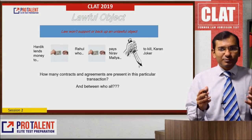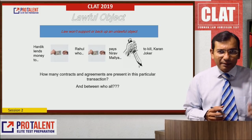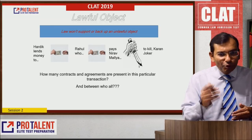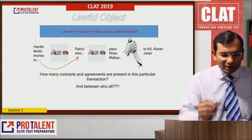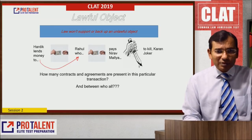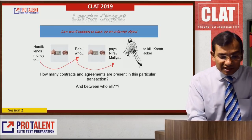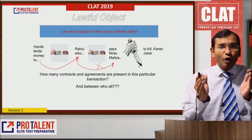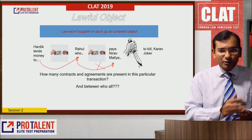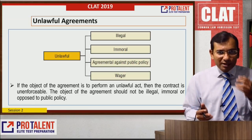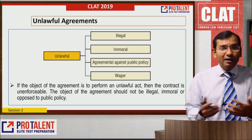Then comes lawful object. Law will not support any unlawful object. For example, Hardik lends money to Rahul — that is a valid contract. But if Rahul pays Nirav to kill Karan Johar, that contract does not have a lawful object and is therefore not valid. Unlawful agreements include agreements which are illegal, immoral, against public policy, or wagering contracts. A wagering contract is a kind of wager or gamble which is not a proper legal agreement.